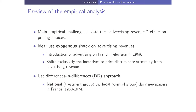The main empirical challenge is to isolate the advertising revenues effect on price discrimination, because there is price discrimination even absent the advertising side of the industry. The idea we use is an exogenous shock on advertising revenues: the introduction of advertisement on French television in 1968. We use a difference-in-differences approach, with national newspapers as the treated group and local newspapers as the control group.